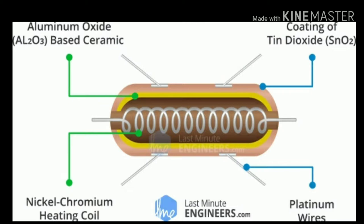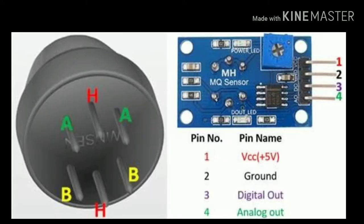MQ2 gas sensor has 4 pins. The first one is VCC which we use to give supply to the sensor. The other one is the ground which is used to ground that sensor. Third is the D0 which is the digital output pin, and fourth is the A0 which is the analog output pin.